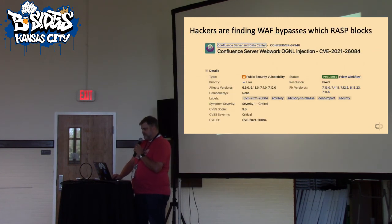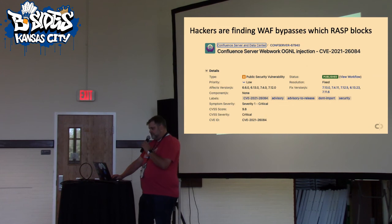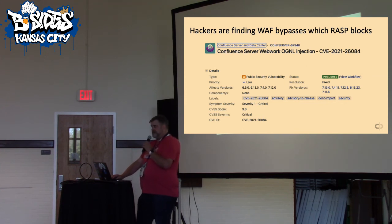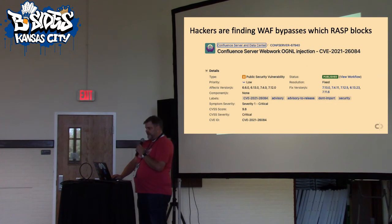Just a WAF wouldn't have blocked those attacks. Same thing in the case of Confluence — if I was running Confluence on-premise, which would be questionable but many people are doing it (specifically government), I would look at running both a WAF and a RASP in that COTS product, because I don't have the ability to make changes to that code and I don't know exactly where the issues are.